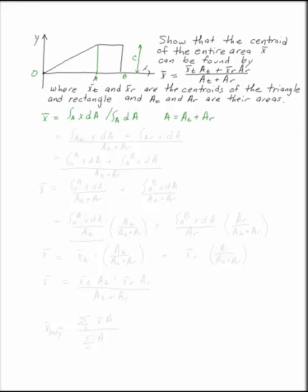Now what I want to do is break up this integral into the integrals from 0 to A and from A to B. You can do that because an integral is just an area. So the integral over the entire area is the integral over the triangle, or from 0 to A, of x dA, plus the integral over the rectangle of x dA, over the integral of the entire rectangle. That denominator is going to just be At plus Ar, that's the entire area that we've got.